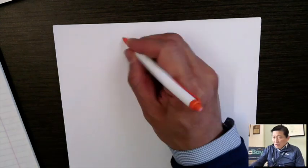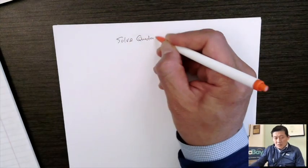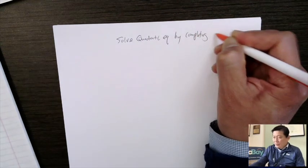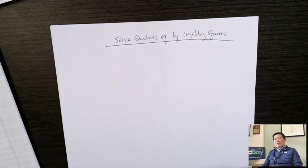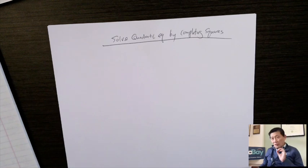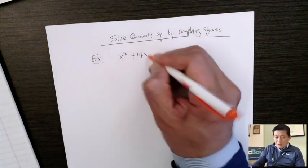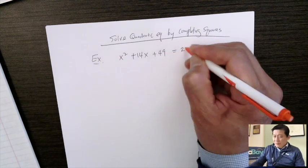Moving on: we move back to the main unit on quadratic functions and equations. One more technique to cover is solving a quadratic equation by completing the square. I mentioned it before in a previous lesson, but let's do one more problem to see the process and rationale. Example: x squared plus 14x plus 49 equals 25.